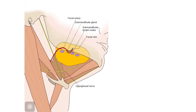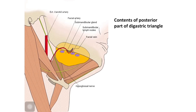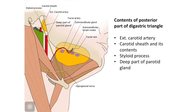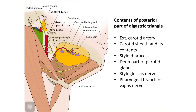The contents of the posterior part of the digastric triangle are: the external carotid artery and the carotid sheath with its contents — the internal jugular vein, vagus nerve, and internal carotid artery. Then we have the styloid process and the deep part of the parotid gland, which extends into the posterior part of the digastric triangle. Finally, two nerves: the glossopharyngeal nerve and the pharyngeal branch of the vagus nerve.